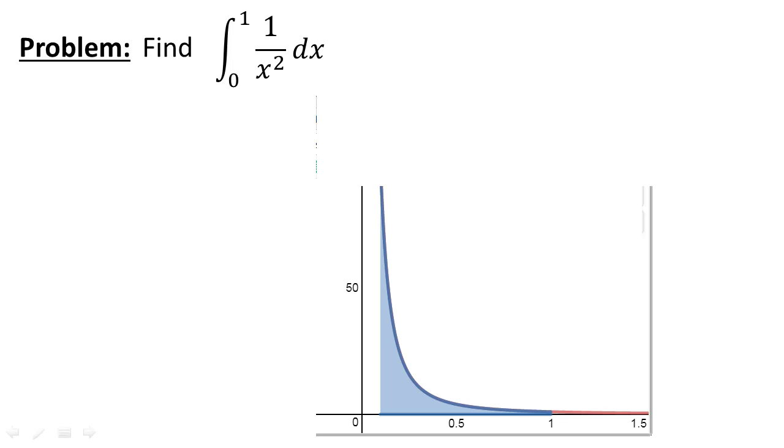But the problem here is that our lower limit is actually not there, it's actually going down to 0. As you can see, when you bring a or the lower limit closer and closer to 0, you can imagine that this function value here is going to get increasingly higher. In fact, when x equals 0, the function value is going to be undefined, it's going to be infinity.